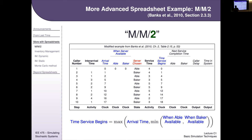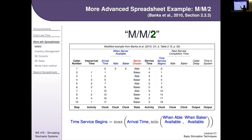The 'when Able available' column is shorthand for the 'when server available — Able' column. In Excel, these would be populated with actual cell references. The Able and Baker values are timestamps — specifically, the next time that server will become idle.